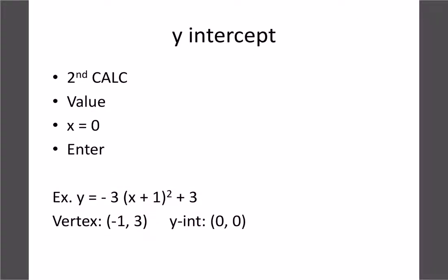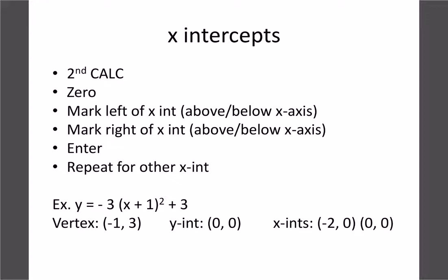For the y-intercept on the calculator, go to Second CALC, choose Value, and put in 0 for x. Since x is 0, we get the coordinate (0, 0) in this case — that's easy to solve. For x-intercepts it's more difficult because we can't enter a y value of 0 directly, so go to Second CALC Zero. Move your cursor left and right of each zero crossing. Going to the far left one: hit Enter, go above the line, hit Enter, Enter again — that gives us negative 2 and 0. The second zero gives us (0, 0), which we already had as our y-intercept, so we only needed to find the one.